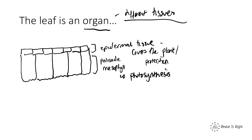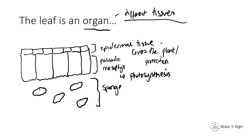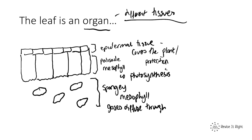The next tissue is the spongy mesophyll. The spongy mesophyll is really where gases diffuse through — carbon dioxide diffuses in and goes into the palisade mesophyll for photosynthesis, and oxygen produced from photosynthesis diffuses out.